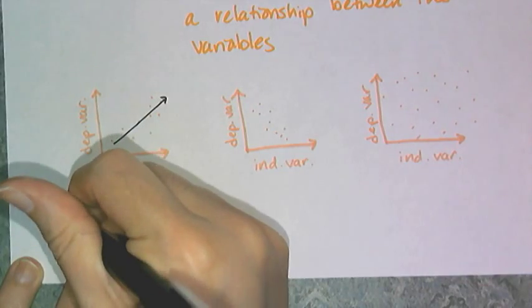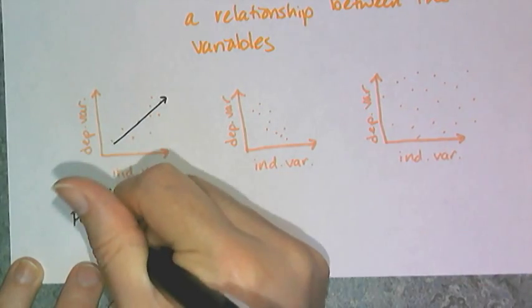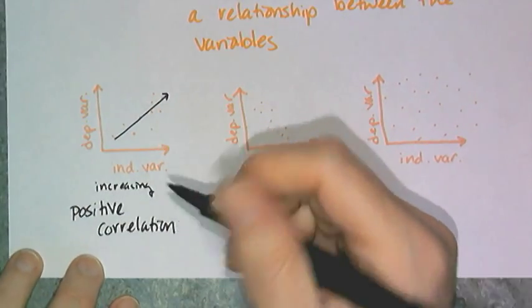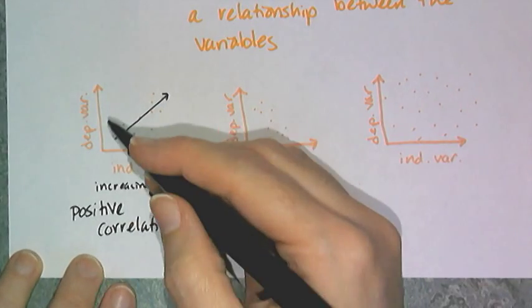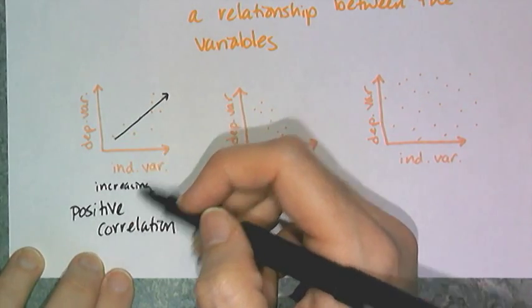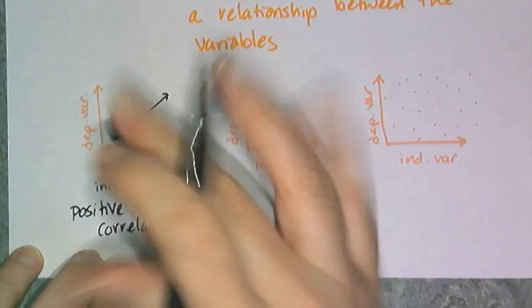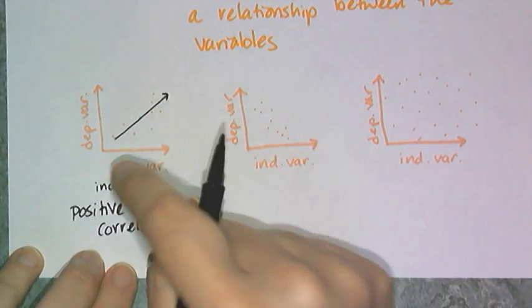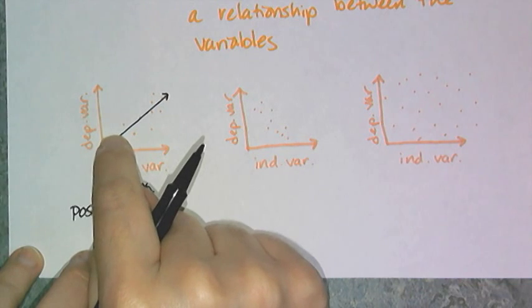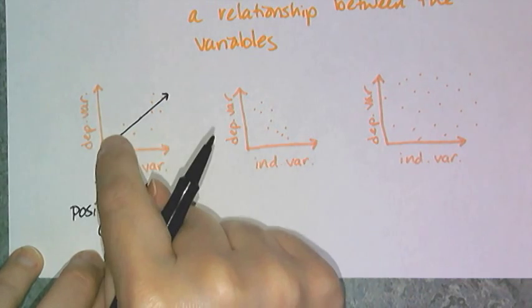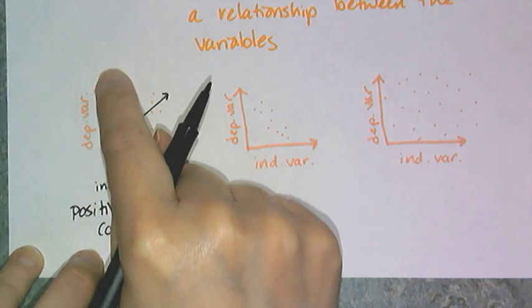We say that there is a positive correlation. And the way that would be phrased is there's a positive correlation between the independent and dependent variables, or they're positively correlated. That's the kind of language you're gonna hear. And what that means is, as the independent variable is increasing, the dependent variable is increasing as well.